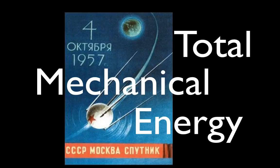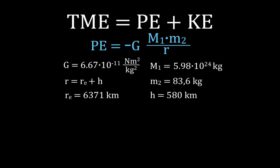As you can see in today's video, we're going to go over a problem involving gravitation. We're going to be calculating the total mechanical energy of Sputnik right here. Sputnik, you'll remember, was launched on October 4th, 1957 — it was the first artificial satellite to orbit the Earth. And we're going to calculate the total mechanical energy of Sputnik when it was orbiting the Earth.